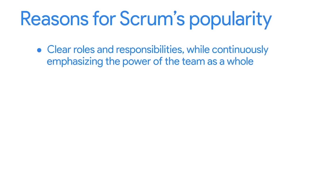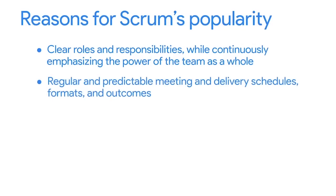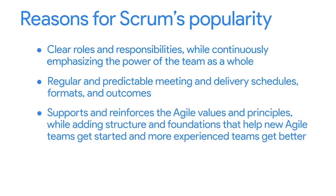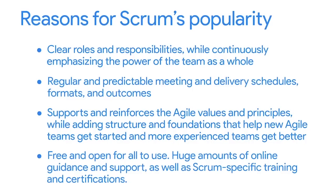Scrum is popular for many reasons. First, it has clear roles and responsibilities for the folks on the team, while continuously emphasizing the power of the team as a whole. Scrum has a very regular and predictable meeting and delivery schedule with predefined agendas and outcomes, making it easy to teach new team members. It supports and reinforces Agile values and principles while adding structure that helps new Agile teams get started and more experienced teams get better. It's all free and open for all to use. Since it's the most commonly used Agile delivery framework, there's also a huge amount of guidance and support online, as well as Scrum-specific training and certifications.